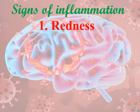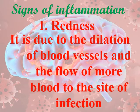The first sign of inflammation is redness. Redness is due to the dilation of the blood vessels and the flow of more blood to the site of infection. More blood arrives at the site of infection to help control the pathogen, bacteria, or virus, causing redness.